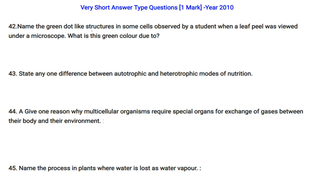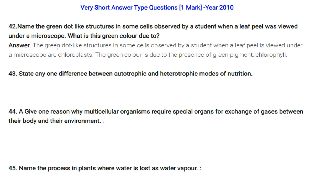Name the green dot-like structures observed in some cells when a leaf peel is viewed under a microscope. What is this green color due to? These structures are chloroplasts, and the green color is due to the presence of the green pigment chlorophyll.